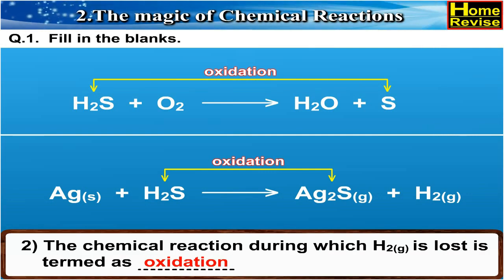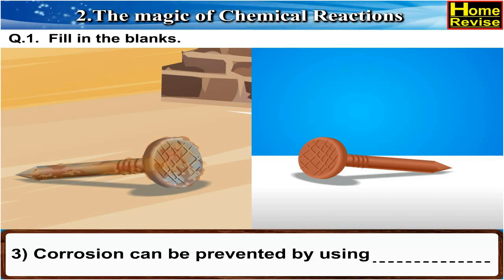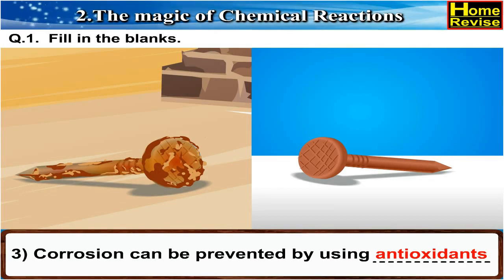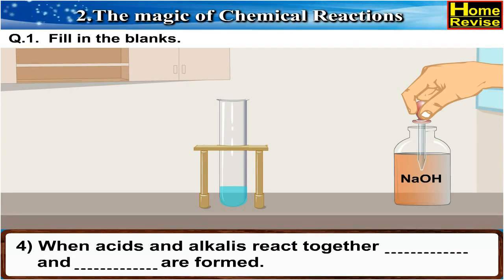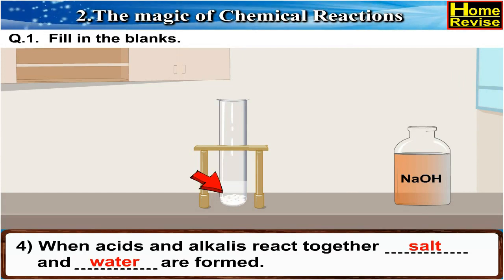3. Corrosion can be prevented by using blank. The answer is: corrosion can be prevented by using antioxidants. 4. When acids and alkalis react together, blank and blank are formed. The answer is: when acids and alkalis react together, salt and water are formed.